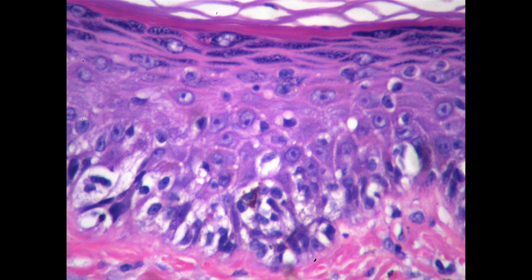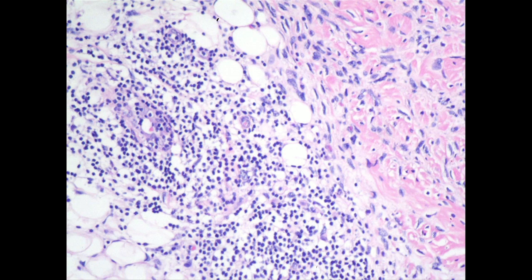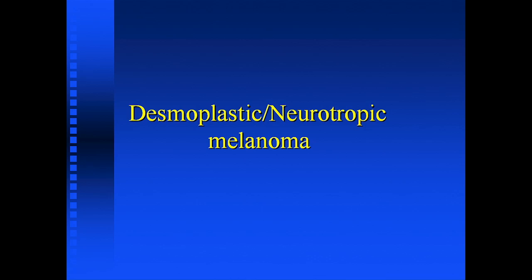You'd be very inclined to say this doesn't look so bad, but then you look at a telltale clue. You look at the epidermis overlying it, and there are solitary melanocytes proliferating — not much atypia, just like an atypical junctional proliferation. Also in another area of the slide are characteristic lymphoid aggregates, which probably represent a type of immune response to this tumor.